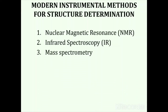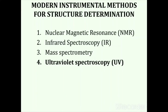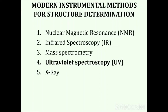The third method is mass spectrometry, used for the determination of molecular mass. The fourth method is ultraviolet and visible spectroscopy, used for the determination of conjugation of compounds — in short form known as UV-Vis spectroscopy. The fifth method is X-ray spectroscopy, used for the determination of surface morphology of different compounds.